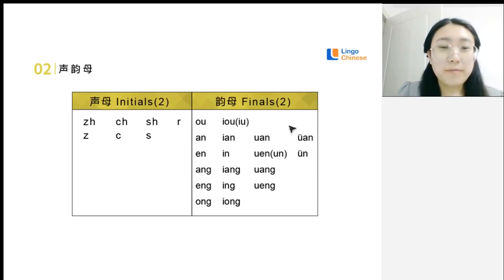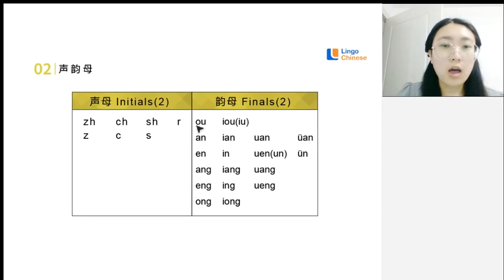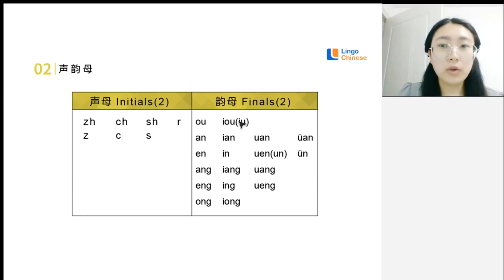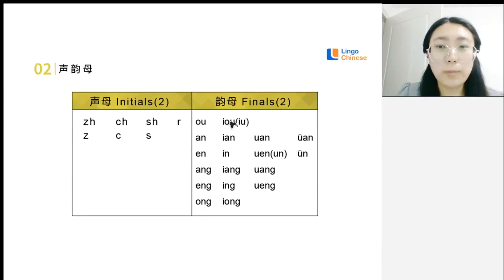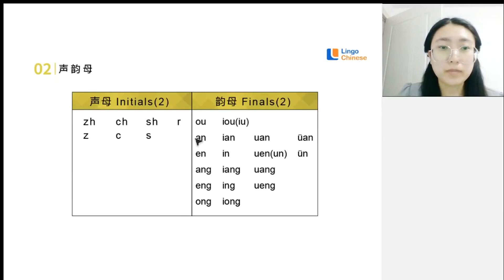Let's learn some finals. We have 'u' and 'e' together forming 'ue'. We speak it like 'ue', but when we write it, we write 'u' and 'e' together. Also, 'u' and 'n' together give us 'un'.